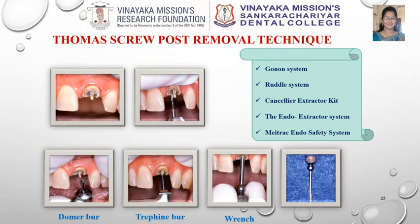Various systems are available in the market for post retrieval, like the Gonon system, Ruddle system, Canceler Extractor Kit, Endo Extractor System, and Masserann Endosafety System. Taking into consideration the Thomas screw post removal technique: the first image shows a broken screw post; the head of the post is contoured to a rough cylindrical shape; a Doma bur is then used to create a shape that a refined bur can engage; the refined bur mills the post; then a wrench is engaged around the post and counter-clockwise rotational force is applied; the post is finally removed using the wrench.